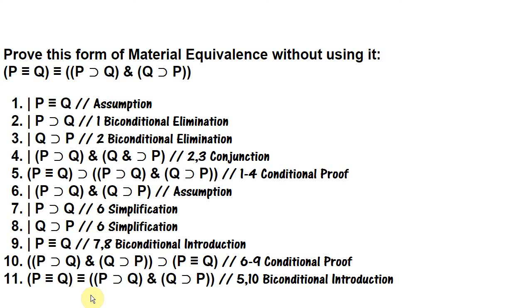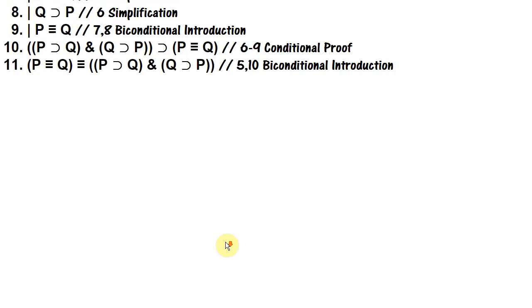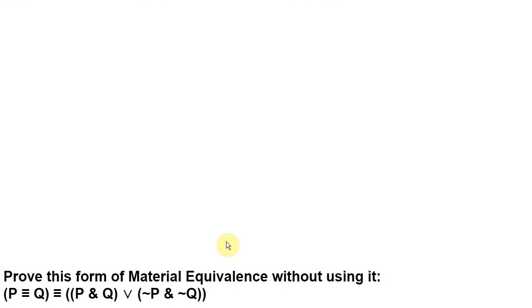Now we're going to prove the other form of material equivalence — the one we use less often — and we'll go through this one more slowly. We want to prove this form without using it: 'p if and only if q' is equivalent to 'p and q or not p and not q.' What this is saying is that when two statements are materially equivalent they're either both true or both false — they have the same truth value.